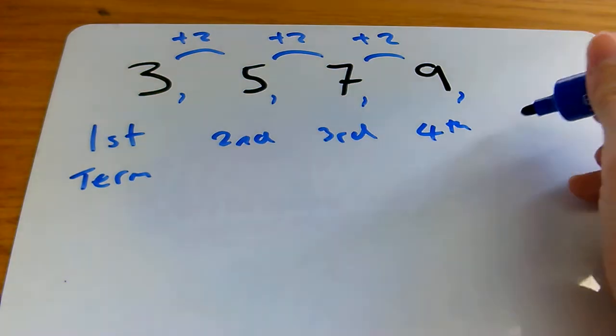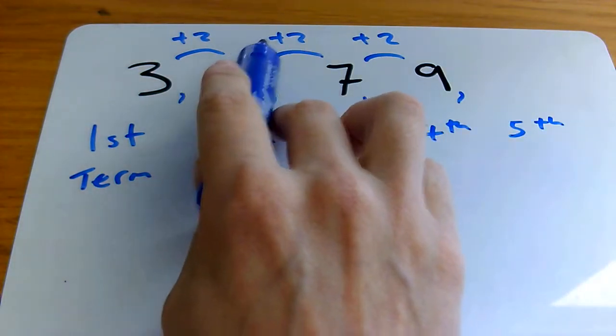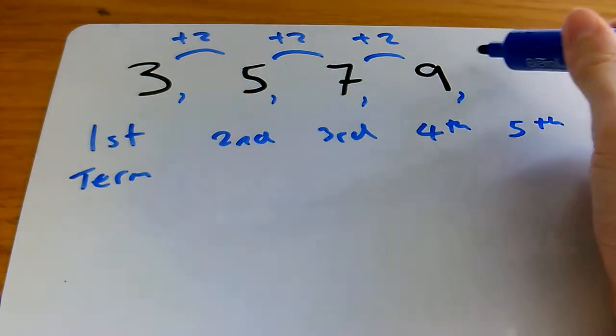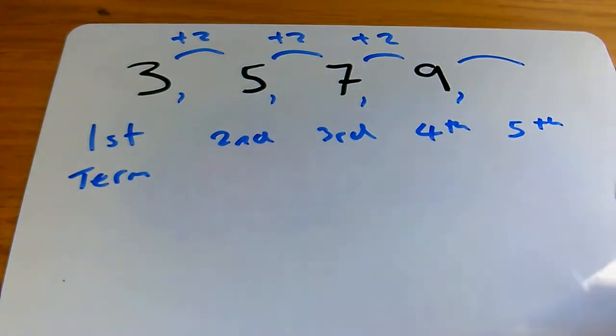So if we want to find the fifth term, which at the moment is unknown, we'd have to apply the term-to-term rule, which as we can see is plus 2. So we'd plus 2 onto the fourth term, so add 2 to 9, and of course we get 11 as the fifth term.